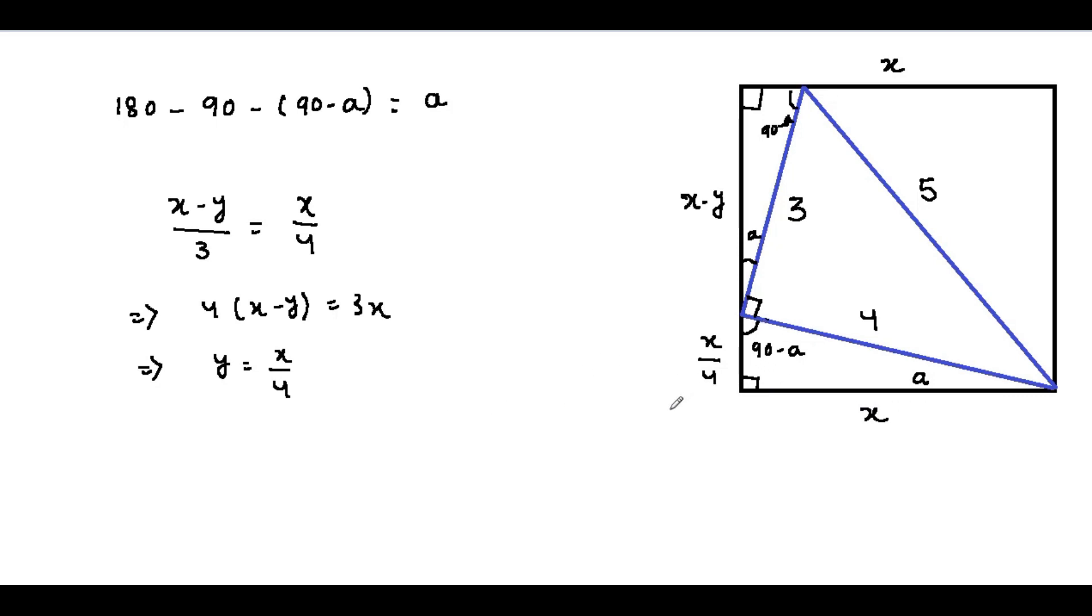We are going to use the Pythagorean theorem, so x squared plus (x/4) squared equals 4 squared.